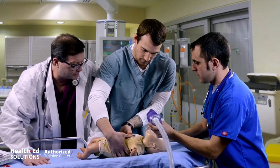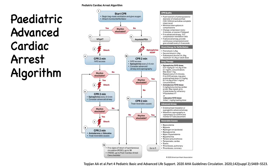This slide shows the American Heart Association PALS algorithm. This algorithm emphasizes the importance of hunting for reversible causes — all of the H's and T's. Probably the most important H's and T's in infants and children are hypoxia and hypovolemia. Depending on the setting, toxins may also be very relevant.